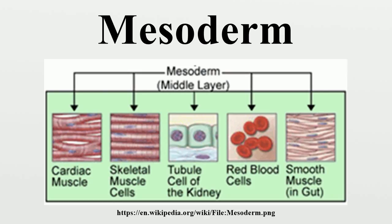During the third week, a process called gastrulation creates a mesodermal layer between the endoderm and the ectoderm. This process begins with formation of a primitive streak on the surface of the epiblast. The cells of the layers move between the epiblast and hypoblast and begin to spread laterally and cranially. The cells of the epiblast move toward the primitive streak and slip beneath it in a process called invagination. Some of the migrating cells displace the hypoblast and create the endoderm, and others migrate between the endoderm and the epiblast to create the mesoderm.